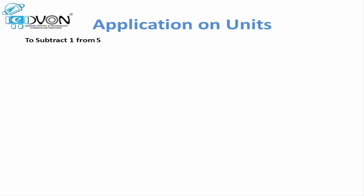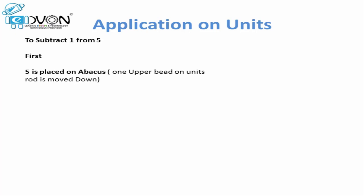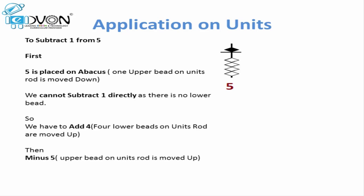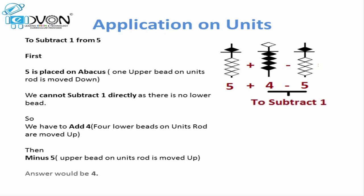Let us apply the minus 1 formula on units. If we want to subtract 1 from 5, first we will place 5 on the abacus — we move the upper bead down on the units rod to touch the calculation bar. Now to subtract 1, we don't have any lower bead touching the calculation bar. We only have 5, so we apply the formula: add 4 and minus 5. We move 4 lower beads up and the upper bead up away from the calculation bar. As a result we get 4 lower beads touching the calculation bar, which represents the value 4. So our answer is 4.